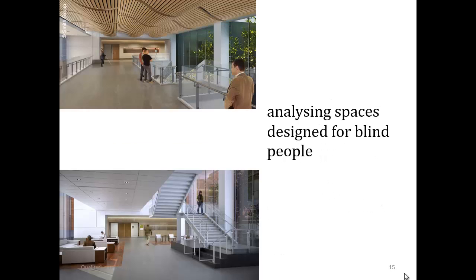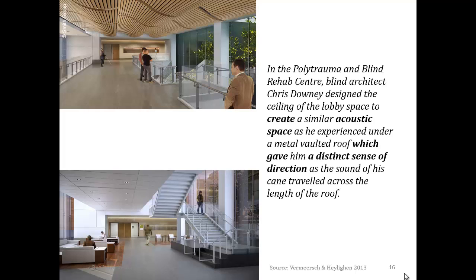A fourth way in which you could approach the spatial experience of people who are blind is to analyze buildings and spaces that have been designed explicitly with blind people in mind. Take, for example, the Polytrauma and Blind Rehab Centre in Palo Alto, which was designed with the help of Chris Downey. Like Carlos Pereira, Chris Downey is an architect who lost his sight. In designing the lobby of this centre, Downey designed the ceiling in such a way as to create a similar acoustic space as he experienced under a metal vaulted roof. This roof gave him a distinct sense of direction as the sound of his cane traveled across the length of the roof.